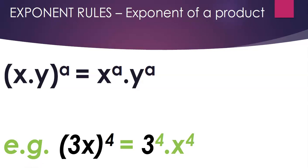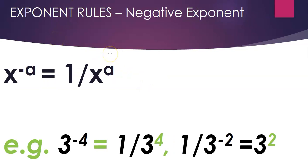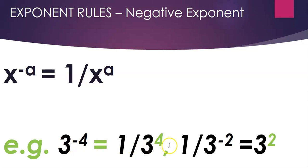Next is the negative exponent rule. Any number or variable raised to a negative exponent is nothing but the reciprocal of its positive counterpart. So x raised to negative a is equal to 1 over x raised to a. For example, 3 raised to negative 4 is 1 over 3 to the power 4, and 1 over 3 raised to negative 2 is 3 squared.